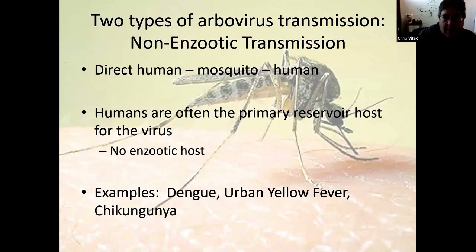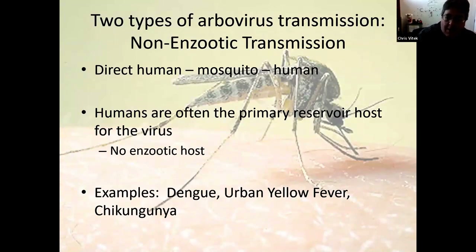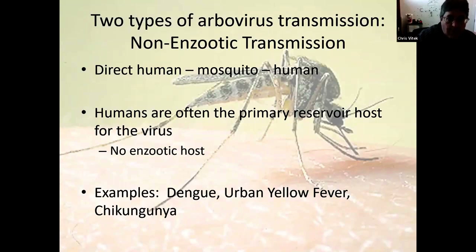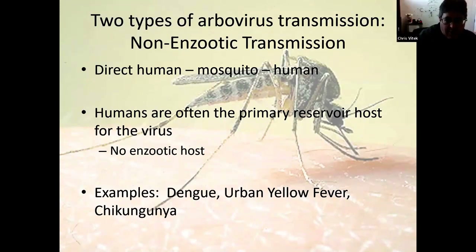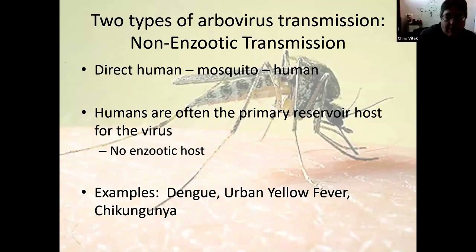The other kind is non-enzootic transmission, where humans act as the host. Humans get bitten by the vector such as a mosquito, and then it gets transmitted to another human. In these cases, we don't have an enzootic animal host — humans are the primary reservoir, and the disease circulates in us and remains transmitted in the human population through vector contact. Examples are chikungunya virus, Zika virus, dengue virus, and urban yellow fever.